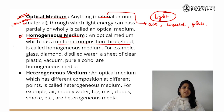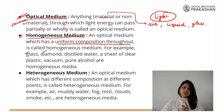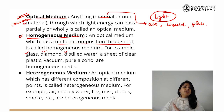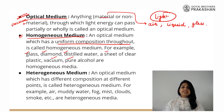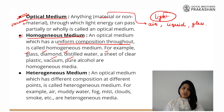Let us look at an example. Glass is made up of one single type of material. Diamond is also made up of carbon — one material. Distilled water has no other material inside it other than water. A sheet of clear plastic, vacuum, or pure alcohol are homogeneous mediums because they are made up of one single material with uniform composition throughout. The glass is not different as we go from left to right or top to bottom, and the same is true for pure alcohol or water.